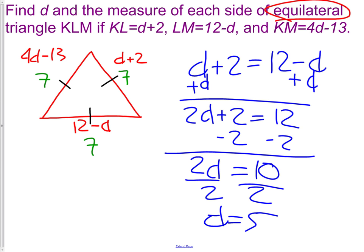We've now found the measurements of all three sides and the measurement of d. And since it was an equilateral triangle, we can easily check this to make sure that it's matching. And that is true. 7, 7, 7 for side lengths would be an equilateral triangle.